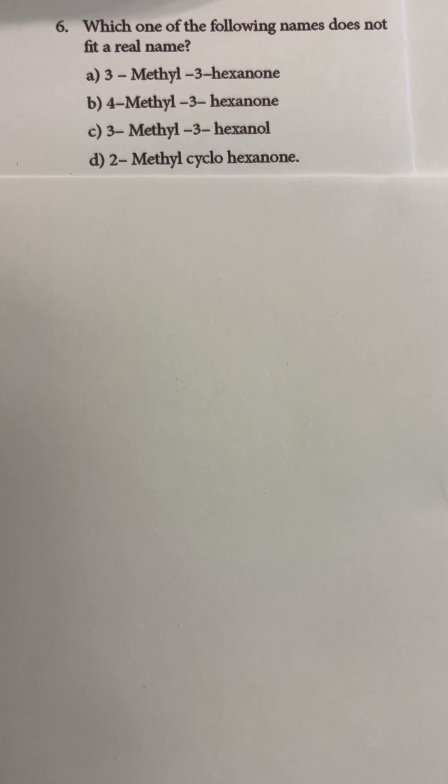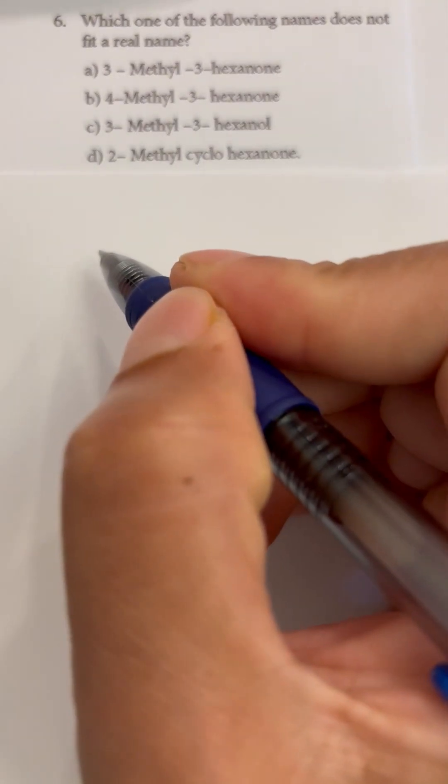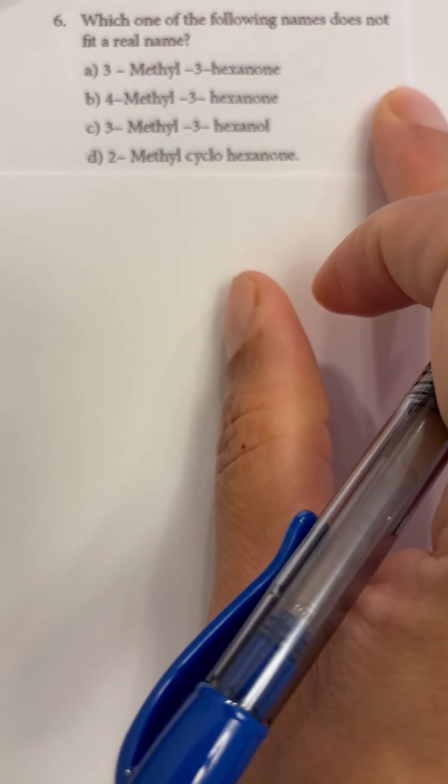If you are unable to draw the structure then that means it doesn't fit a real name. So option A is 3-methyl-3-hexanone.